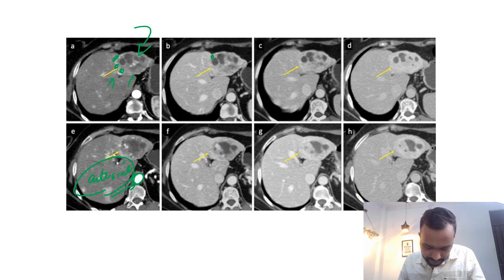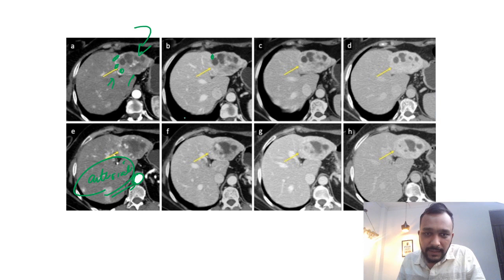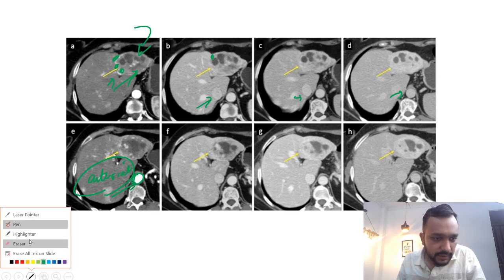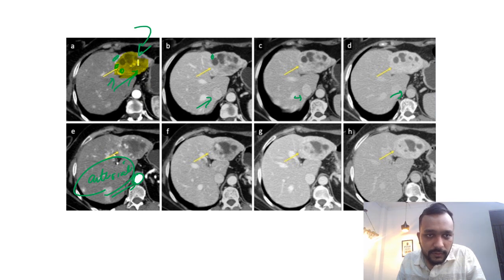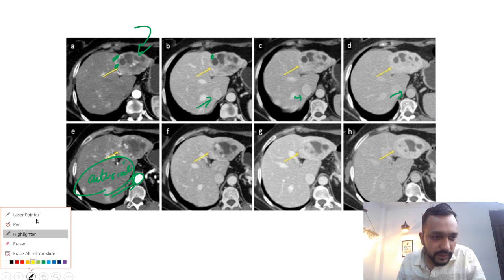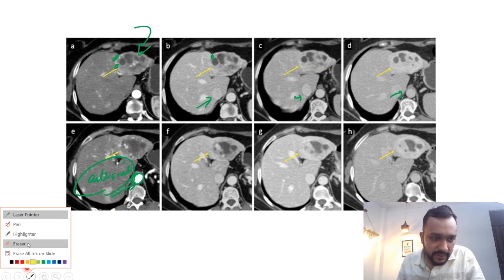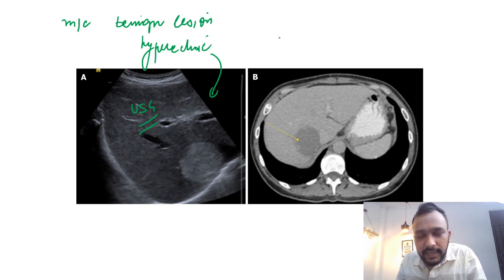If you look at the enhancement of the aorta, you can very well identify that this is an arterial phase. In the portal venous and delayed scans, you will see that this portion of the lesion is showing progressive enhancement. Because of this progressive enhancement, this is a case of hemangioma.